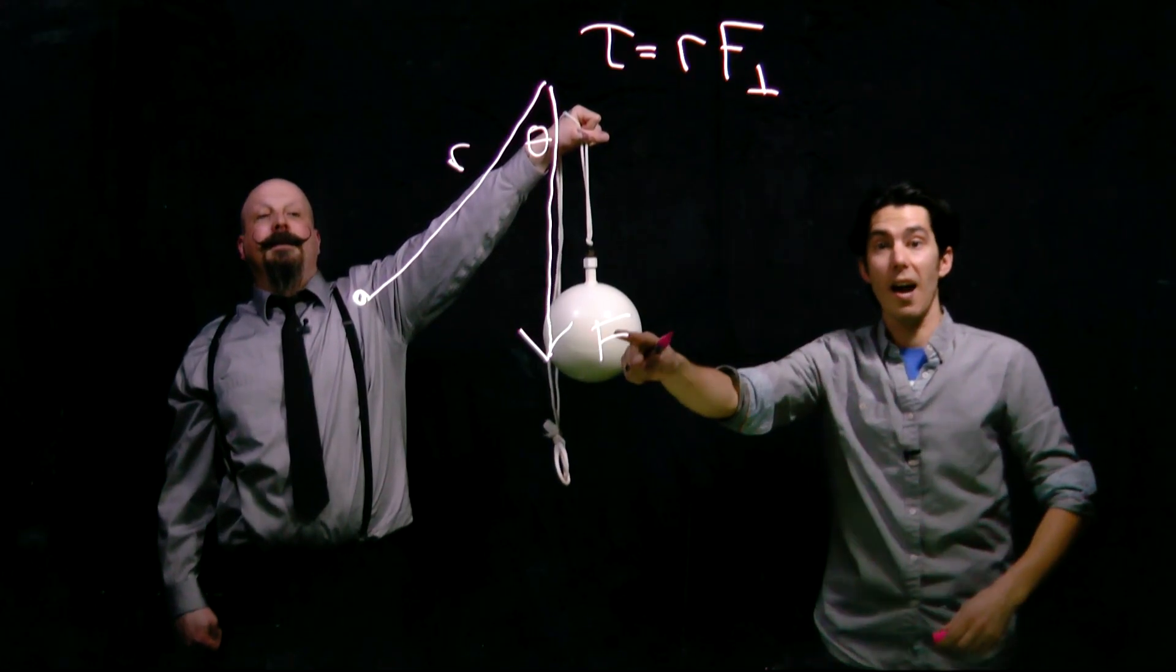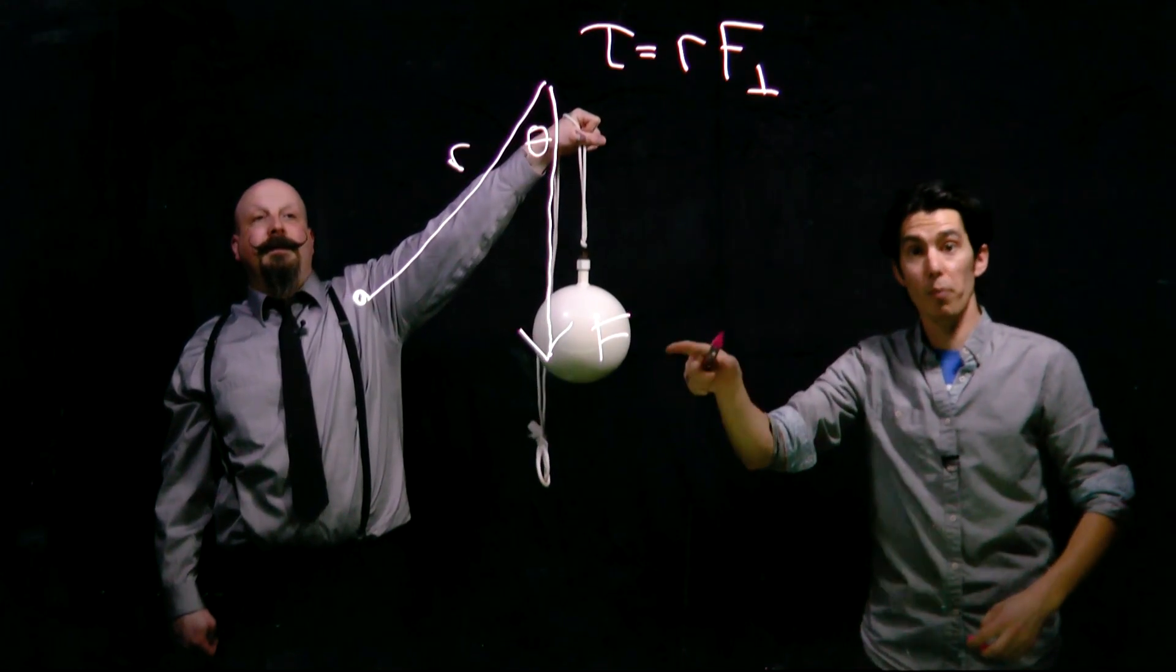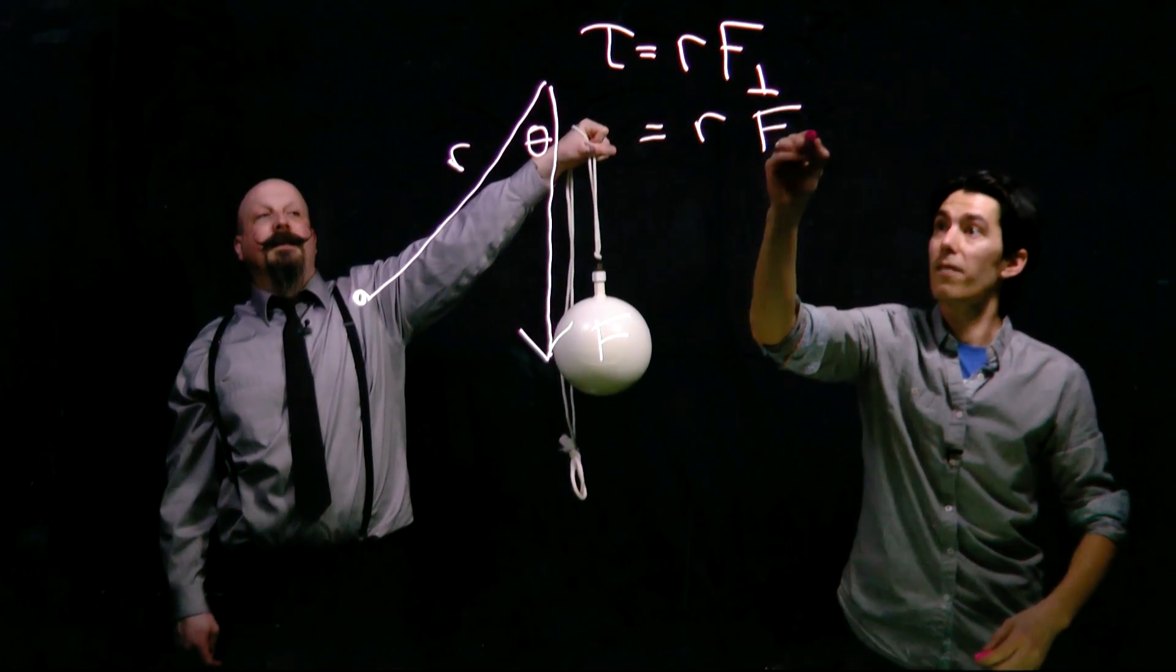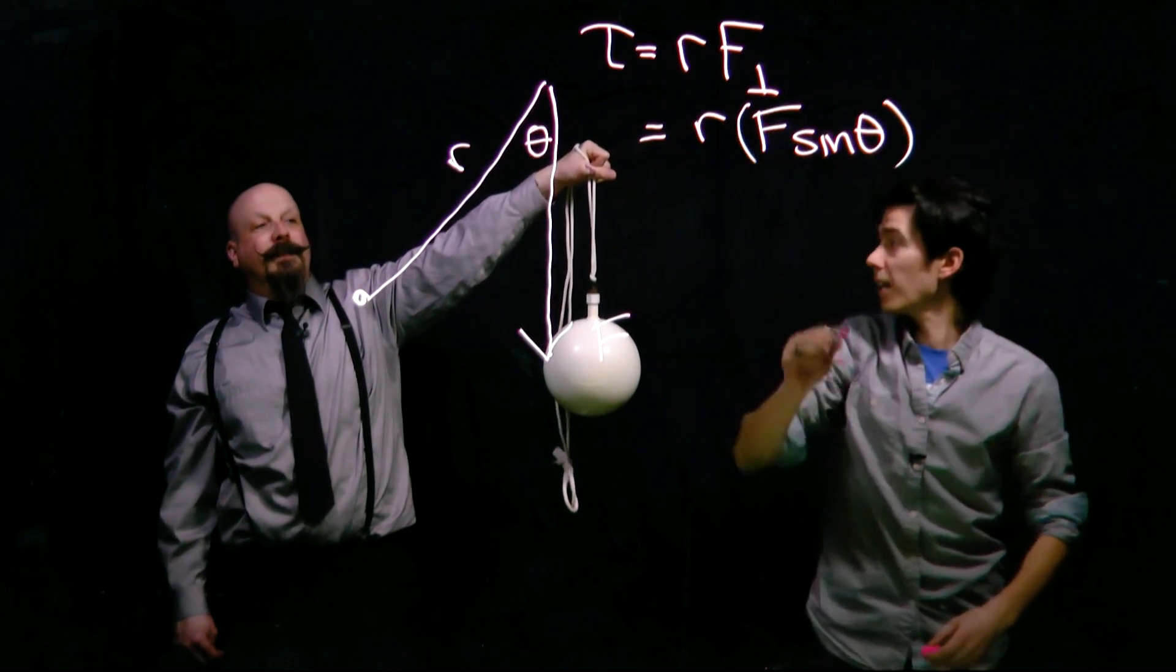Alright, so here we've got F and we're only going to take the perpendicular component. So that's going to be R times F sine theta, right?